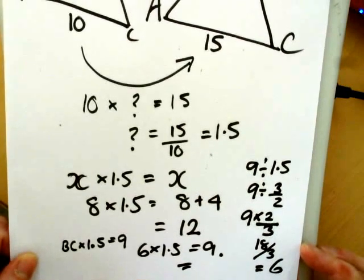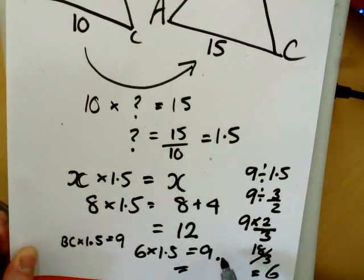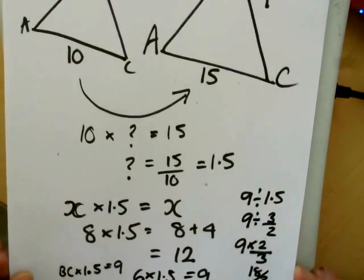Without a calculator, it's often best just to try some whole numbers that are close. So it's 6 times 1.5, which is 9. So that's similar shapes.